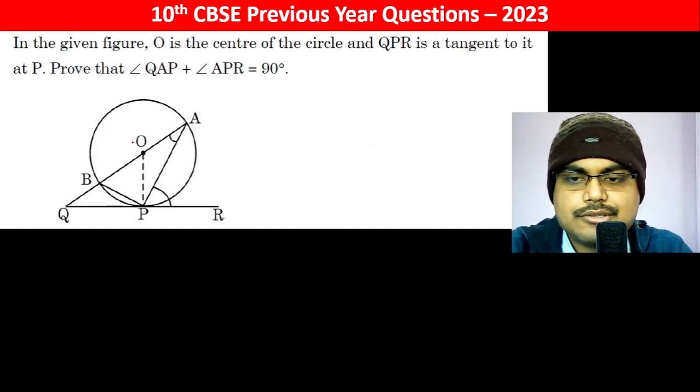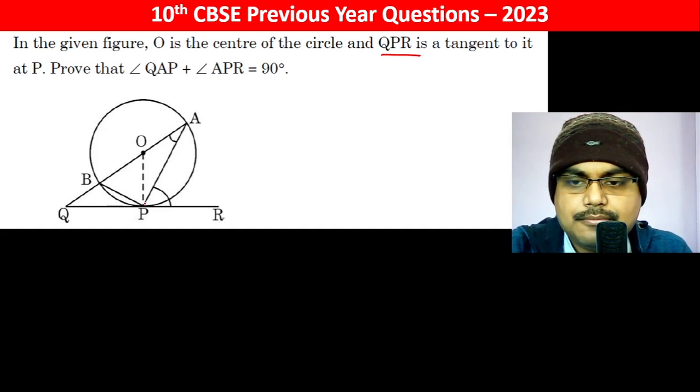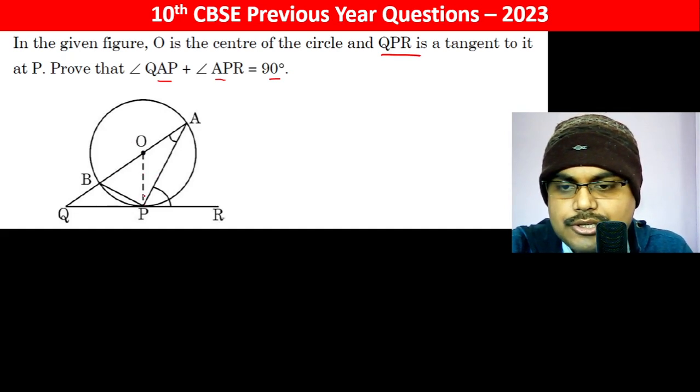In the given figure, O is the center of the circle and QPR is tangent to it at P. Prove that angle QAP plus angle APR equals 90 degrees. Since we have a tangent at P, the angle with the radius is 90 degrees.